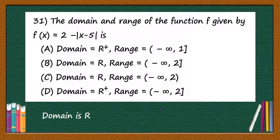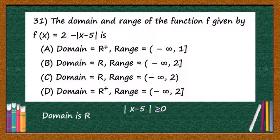And to find the range of this function, first let us analyze where does |x - 5| lie. |x - 5| is always greater than or equal to 0, you know this result.